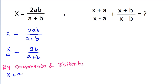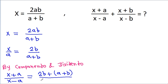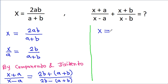By applying componendo and dividendo, we can get x plus a by x minus a is equal to 2b plus a minus b by 2b minus a plus b. Similarly, we have x is equal to 2ab by a plus b.